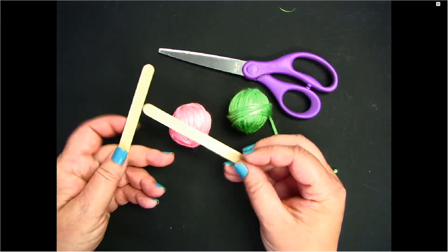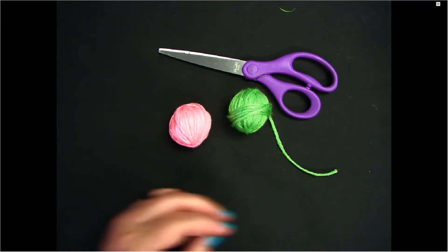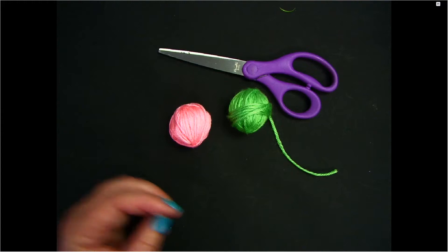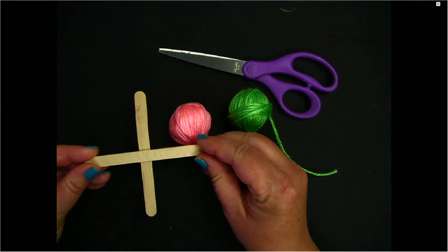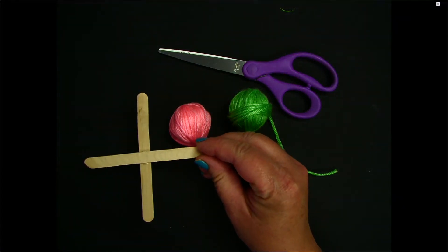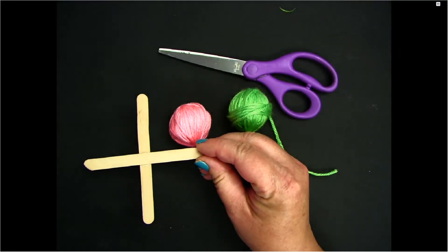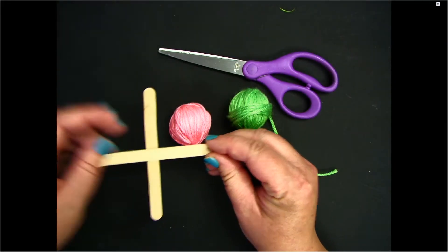To make this project easier, I went ahead and used a hot glue gun to glue my popsicle sticks together to make a plus sign. If you do not have anyone to help you do that, then you can make a plus sign by tying your sticks together with the yarn.